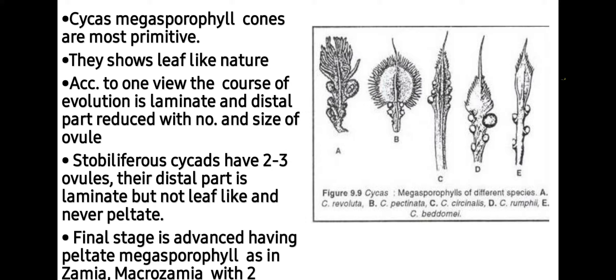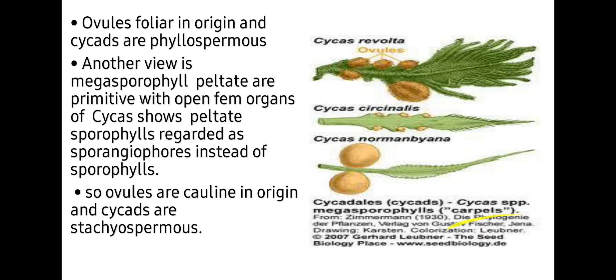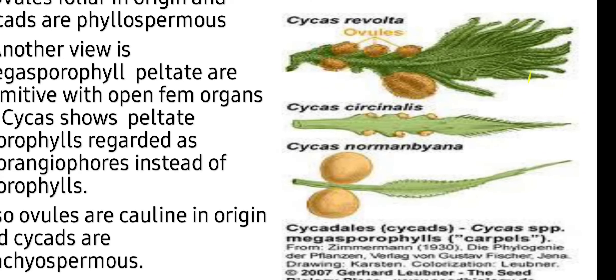According to one view, the course of evolution is that the laminate and distal part is reduced in number and size of ovules. Strobiliferous cycads have 2 to 3 ovules. The distal part is laminate but not leaf-like and never peltate. Each advanced stage has peltate sporangia, as in Zamia and Macrozamia, with 2 ovules. Cycads are phyllospermous, meaning ovules arise from the leaf. Another view is that peltate megasporophylls are primitive, with open female organs of Cycas regarded as sporangiophores instead of sporophylls, making cycads stachyospermous, meaning they arise from the stem.